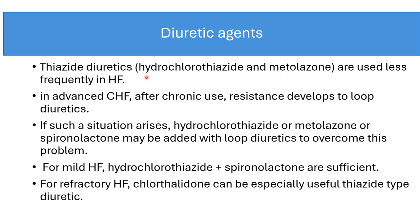Thiazide diuretics like hydrochlorothiazide and metolazone are less useful in heart failure. In advanced congestive heart failure, after chronic use of loop diuretics, resistance may develop. In such conditions, hydrochlorothiazide, metolazone, or spironolactone may be added to overcome resistance. For mild heart failure, hydrochlorothiazide plus spironolactone can be given, and for refractory heart failure, chlorthalidone can be useful as a thiazide-type diuretic.